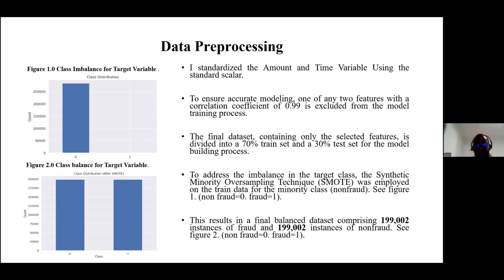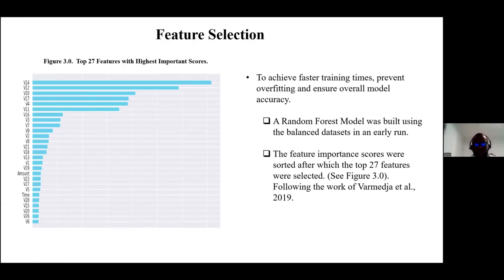I corrected for class imbalance by using the Synthetic Minority Oversampling Technique on the target class, since non-fraudulent activities vastly outnumbered fraudulent ones. After correction, the final training data had an equal amount of fraudulent and non-fraudulent activities, as shown in the diagram. I then conducted feature selection by building an initial random forest model, generating feature importance scores, and selecting the top 27 features to be used further in the model building process. This was done to achieve faster training time and prevent overfitting.